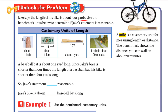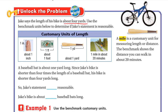Jack says the length of his bike is about four yards. In the picture, we see that the bicycle is greater than one baseball bat — it's more than one yard, but not four yards. Four yards would be too much. So Jack's statement is not reasonable. It looks more like one and a half baseball bats long, or about one and a half yards.